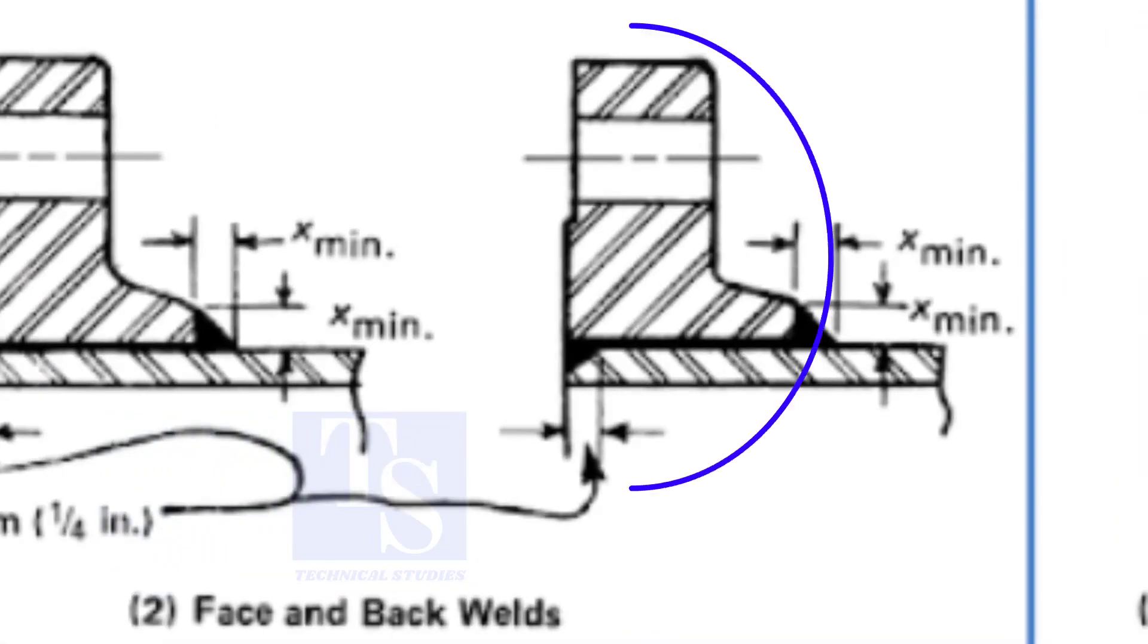In the third method, you can see the face of the pipe and the flange are the same. Here, the end of the pipe is beveled.